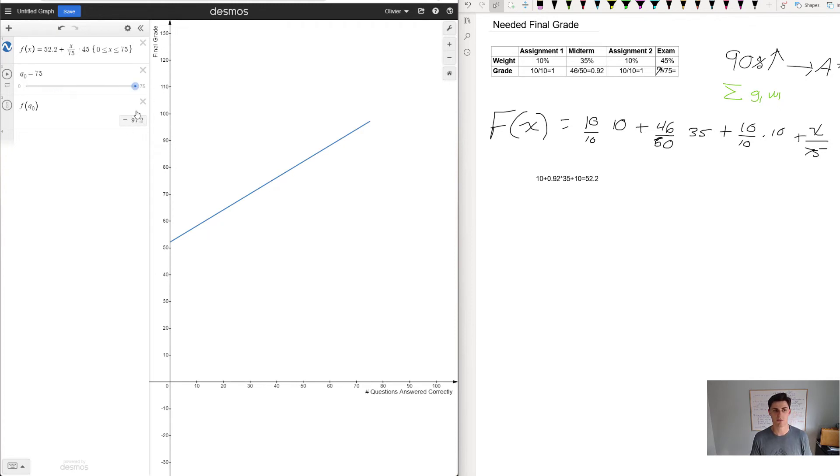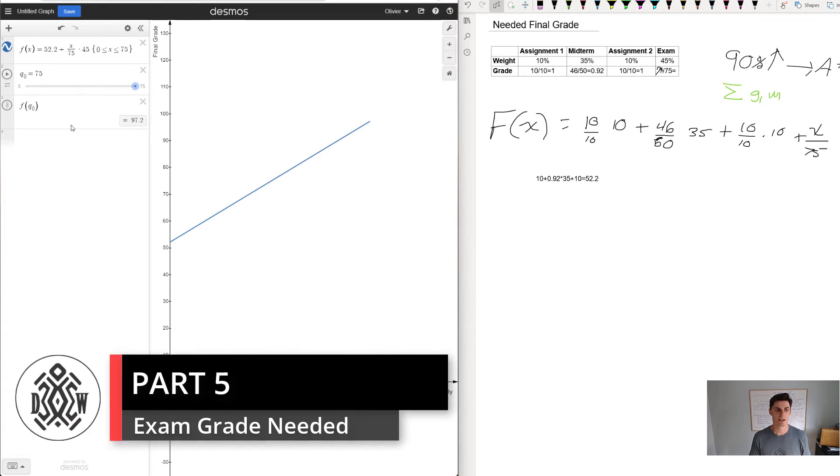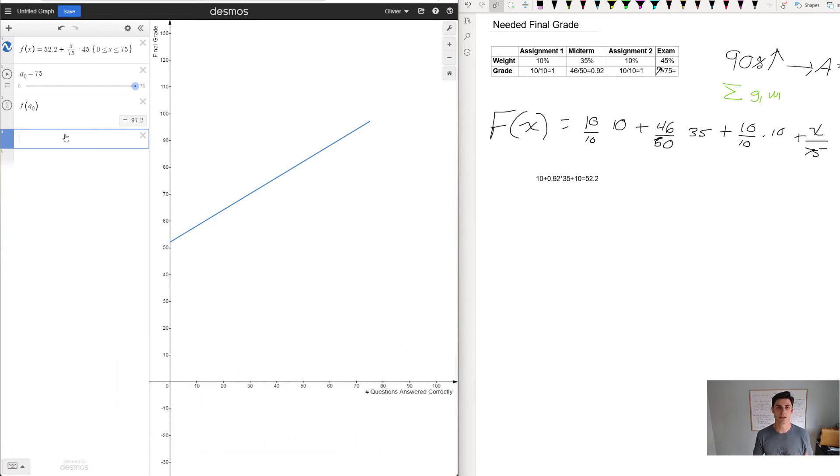I can ask myself how many questions do I need to get at least 90? It's essentially asking, we have y equals 90, what's the point of intersection between those two lines? Desmos tells you right away that it's 63.